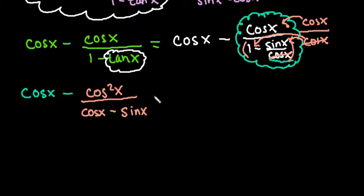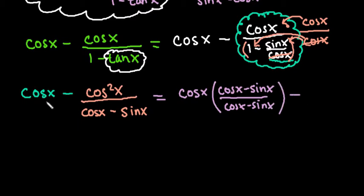So now what I want to do is I want to be able to add these fractions together. Well, right now they don't have a common denominator, so what I need to do is multiply cosine x by cosine x minus sine x over cosine x minus sine x. And that way, I will have a common denominator. And on this side, I have cosine squared x over the same thing.